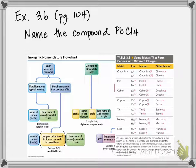Pb in this case is lead — it is considered a metal — and Cl is chlorine, which is considered a nonmetal. So here we have an ionic compound.